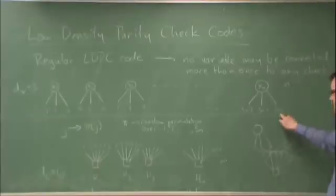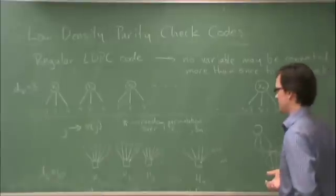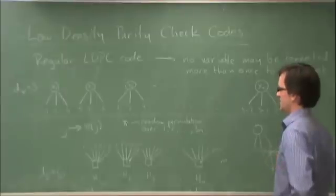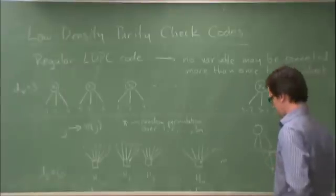And in fact, what you can show is that as n goes to infinity, with probability one, all the cycles are infinitely long. But that's something you can look up in the literature for these kinds of codes.